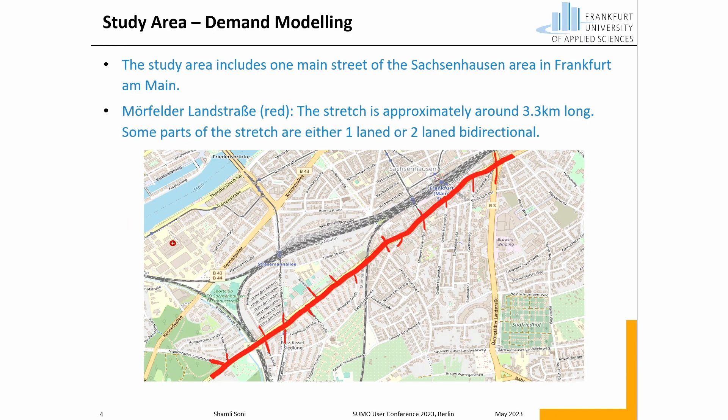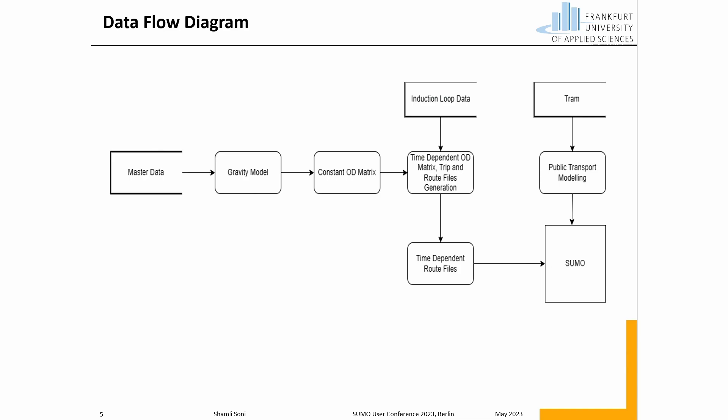The demand modeling was done on the study area shown in this slide where the route highlighted in red signifies the Morfelder Landstrasse, which is around 3.3 km long and is either one-laned or two-laned bi-directional. This slide explains the data flow diagram used in this study, where the first block is the master data which consists of the road network imported from OpenStreetMap and the aggregated vehicular count for 24 hours, received in the form of shapefiles. This aggregated vehicular count was then fed into the gravity model, a mathematical model used to generate a constant origin-destination matrix.